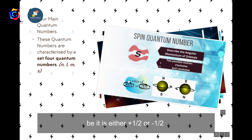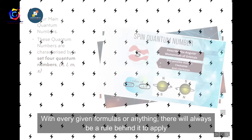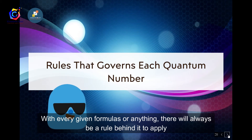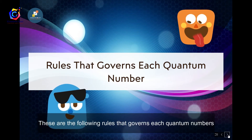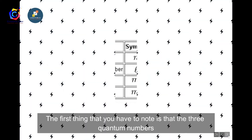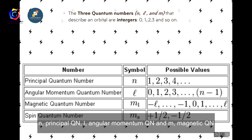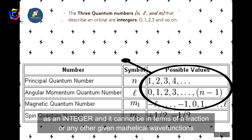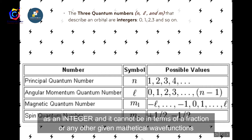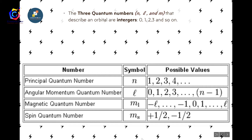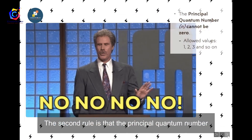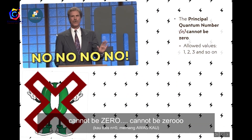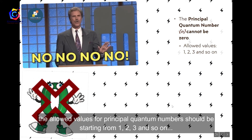With every formula there are rules. The first rule: the three quantum numbers n, l, and m must be integers — they cannot be fractions. The second rule: the principal quantum number n cannot be zero; allowed values start from 1, 2, 3, and so on.